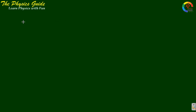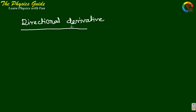Now I am going to another topic related to the gradient of a scalar field, called directional derivative. The directional derivative is the component of the gradient of any scalar function along a particular direction. Let there be a vector A, and the unit vector of A equals A divided by its modulus.